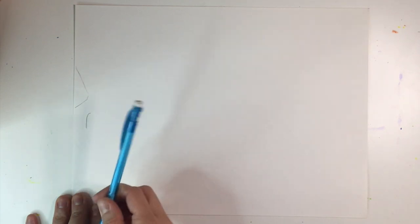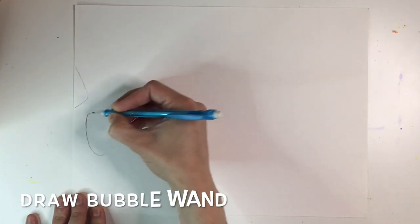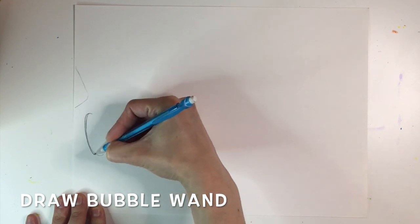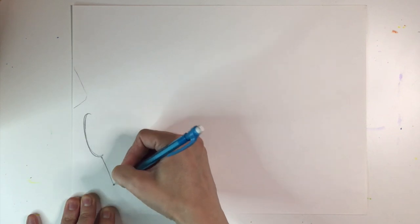I'm going to start by drawing the bubble wand. I sort of planned out where my nose was going to be, that triangle up there. I'm starting with the letter C and drawing the handle below. Make sure to draw the handle going off the page.